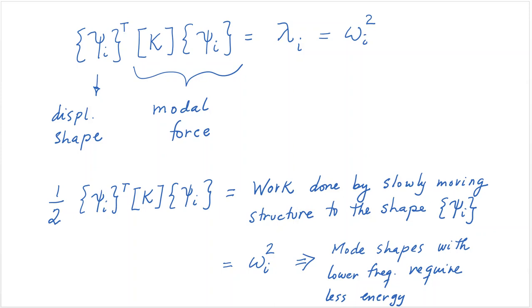The interesting thing about this is that if you basically multiply by one half, you realize that this is nothing more than the work being done by slowly moving the structure to the shape psi i. Because k times psi is a force, by virtue of Hooke's law. k times x is f. And that displacement times a force is work, which basically means that mode shapes with lower frequency require significantly less energy to be moved.